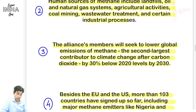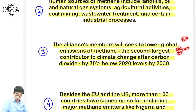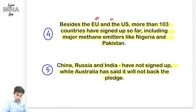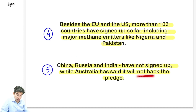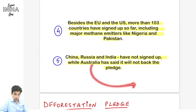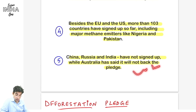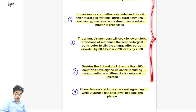Methane primarily agriculture se hota hai, natural gas system mein hota hai, landfills mein methane hoti hai. Yeh notes ke liye kuch pointers hain: alliance members lower global emission of methane - second largest contributor to climate change after carbon dioxide, contributing around 18%. Isko contribution ka bhi 30% below laana hai 2020 level ka by 2030. EU, US aur 103 countries ne sign kiya hai. Major methane emitters like Nigeria aur Pakistan ne bhi sign kiya, par China, Russia, India ne sign nahi kiya.